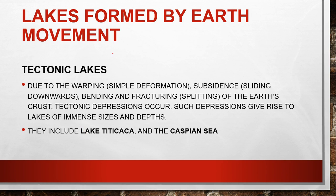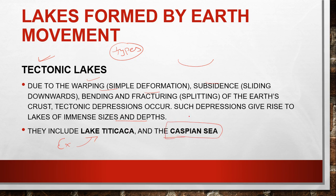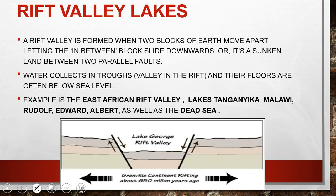Now let's talk about the types of lakes. First are tectonic lakes, formed due to the warping, subsidence, bending, and fracturing of the earth's crust — creating tectonic depressions that give rise to lakes of immense size and depth. For example, Lake Titicaca and the Caspian Sea are examples of tectonic lakes.